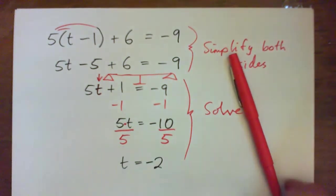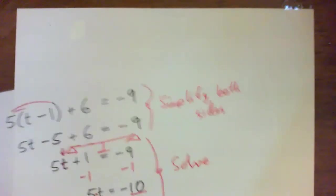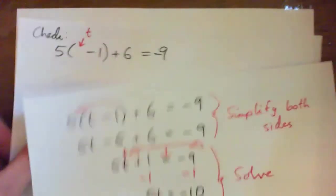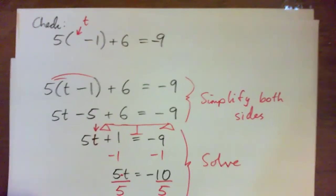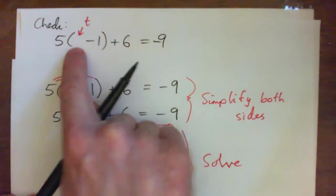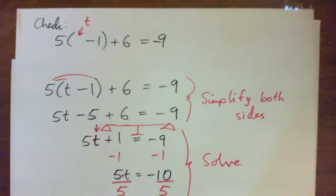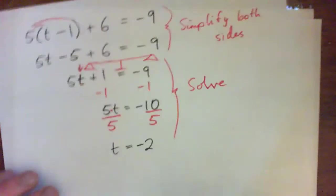So that's the answer and I'm going to check it just for fun. From the outset we said that if we plug a certain number in here it should make both sides the same. We found t equals negative 2.